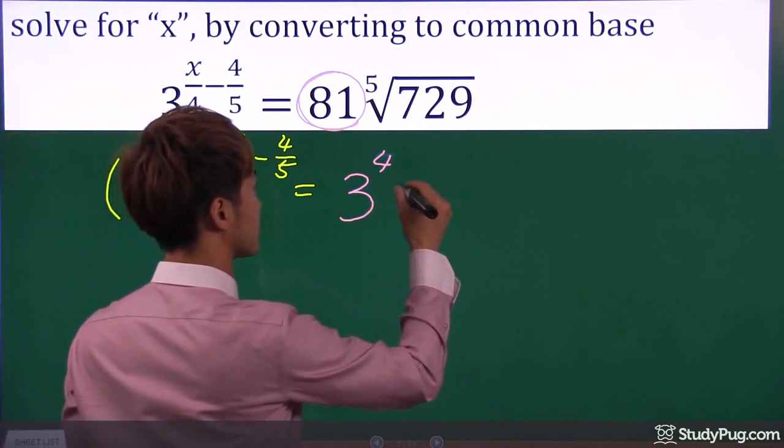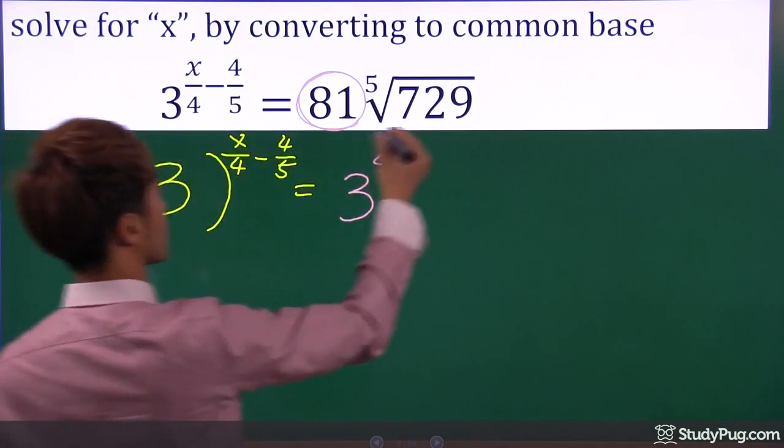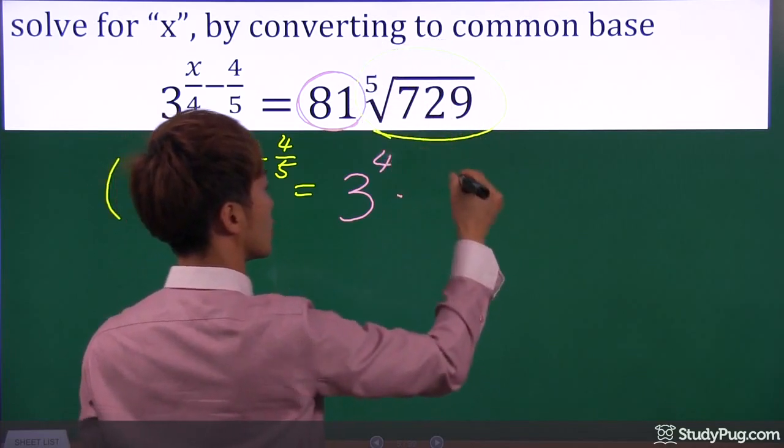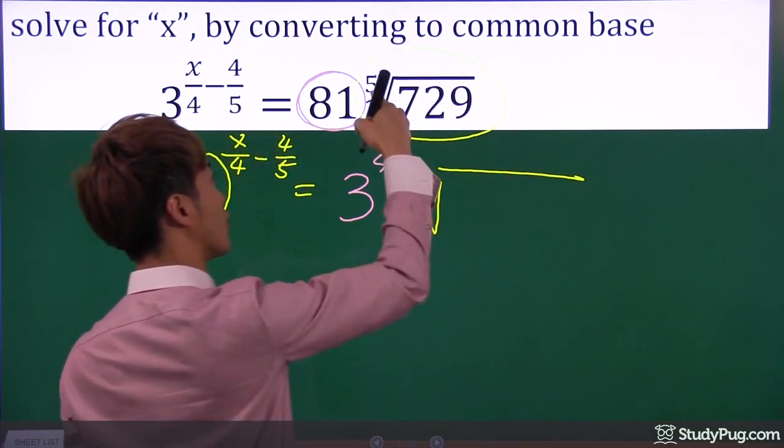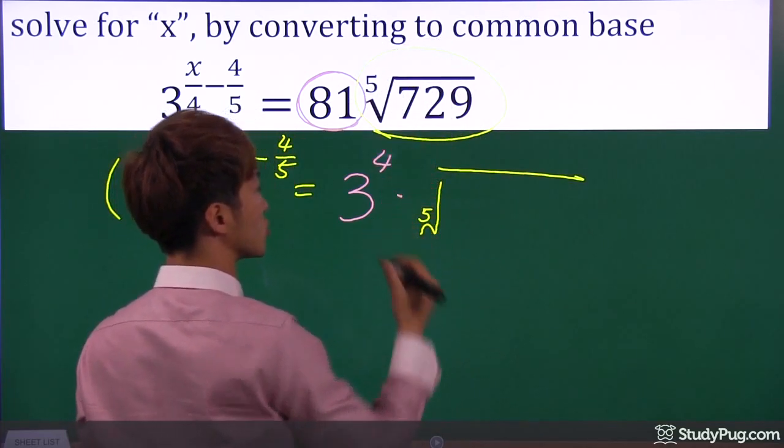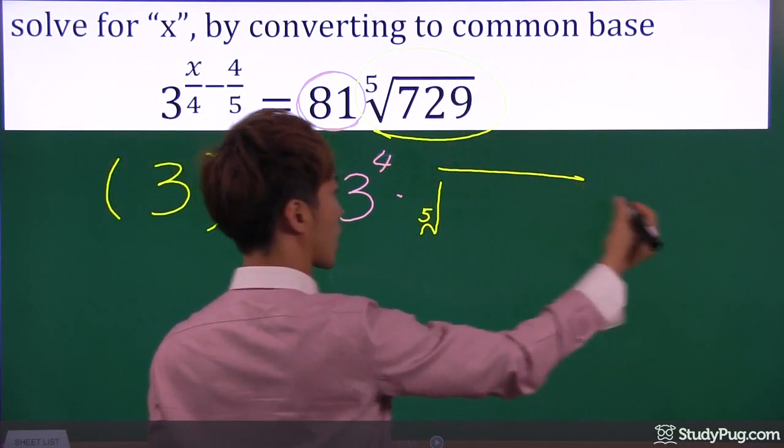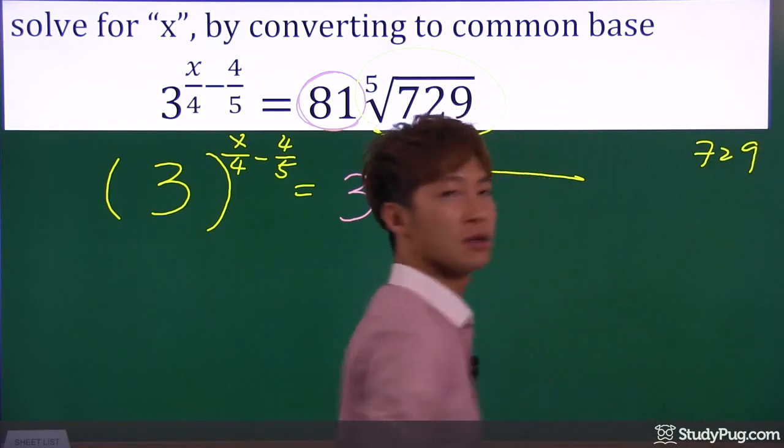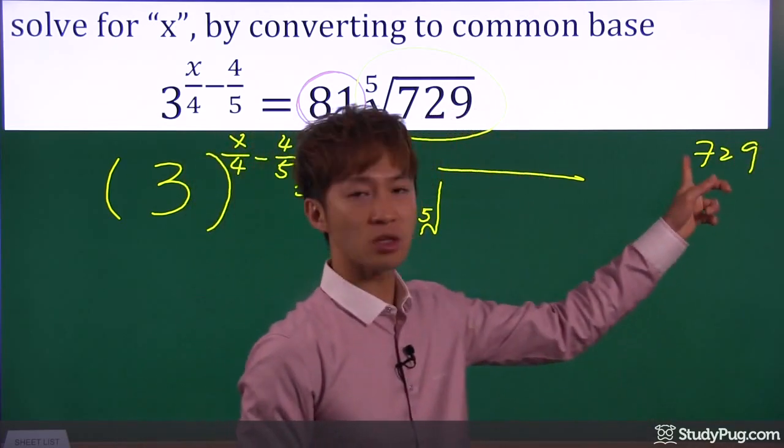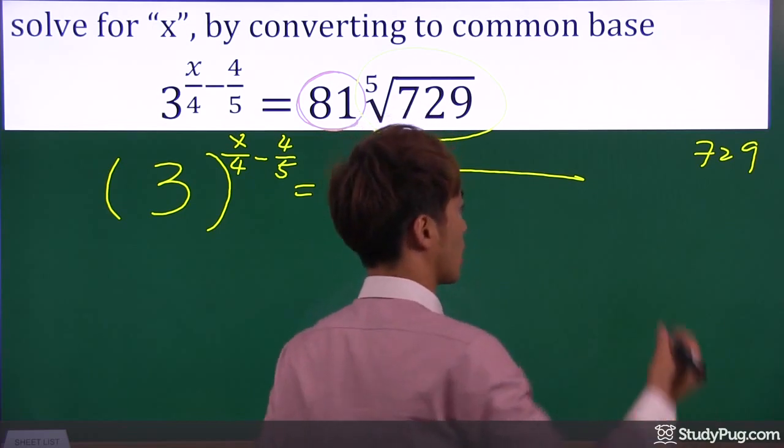And then next, how about this guy right here? We have a fifth root, and inside is fifth root of 729. Now, 729, not as obvious. Are we able to convert this to base of three? Let's see.